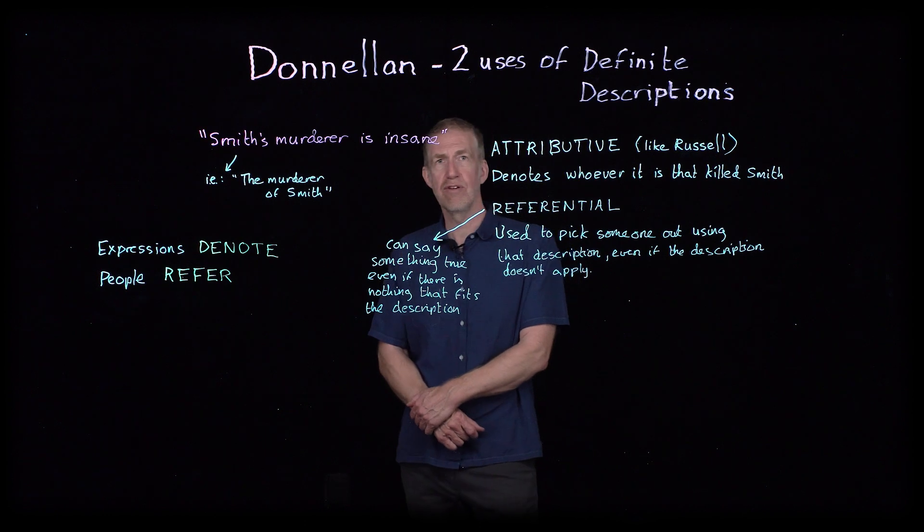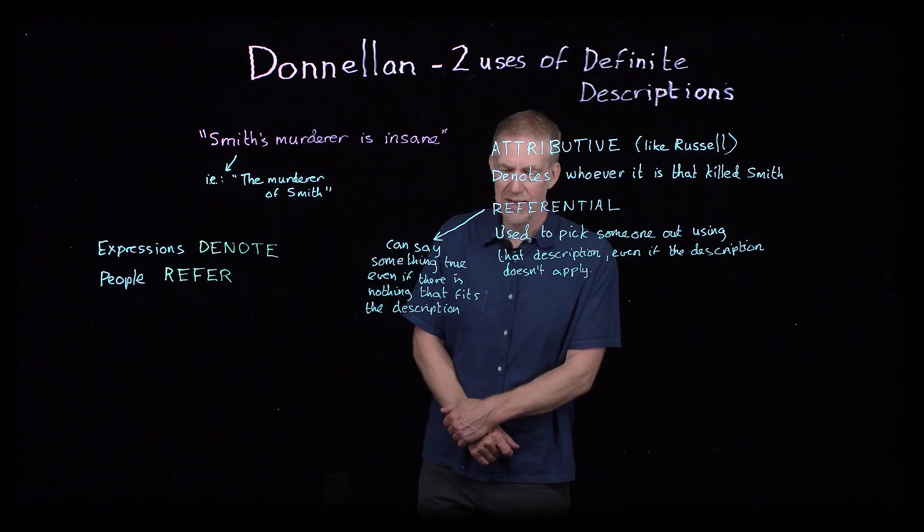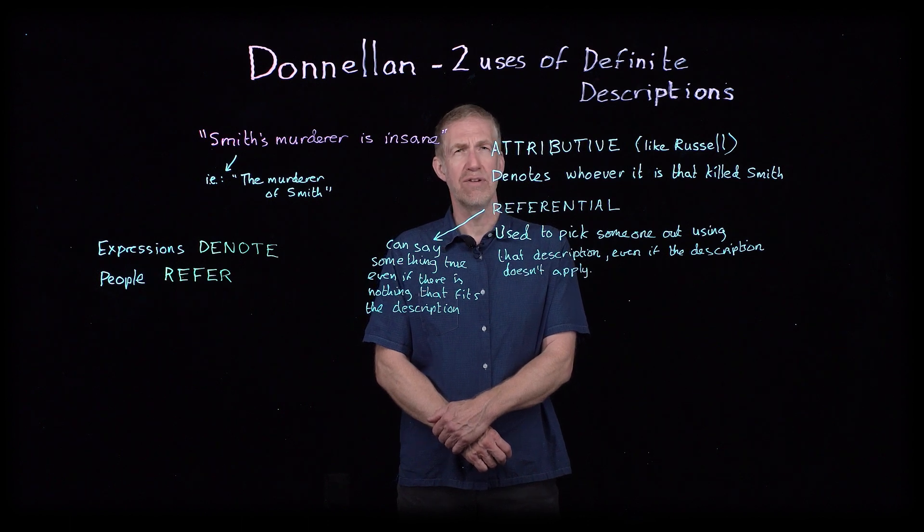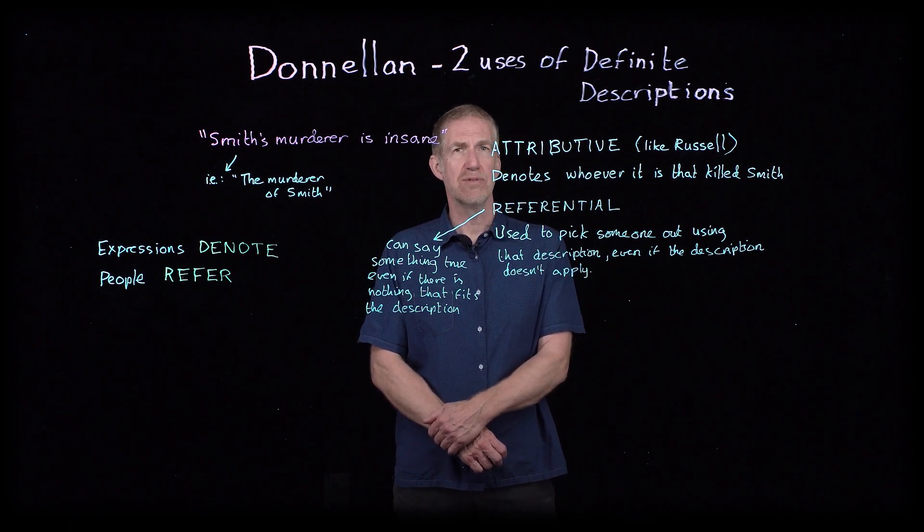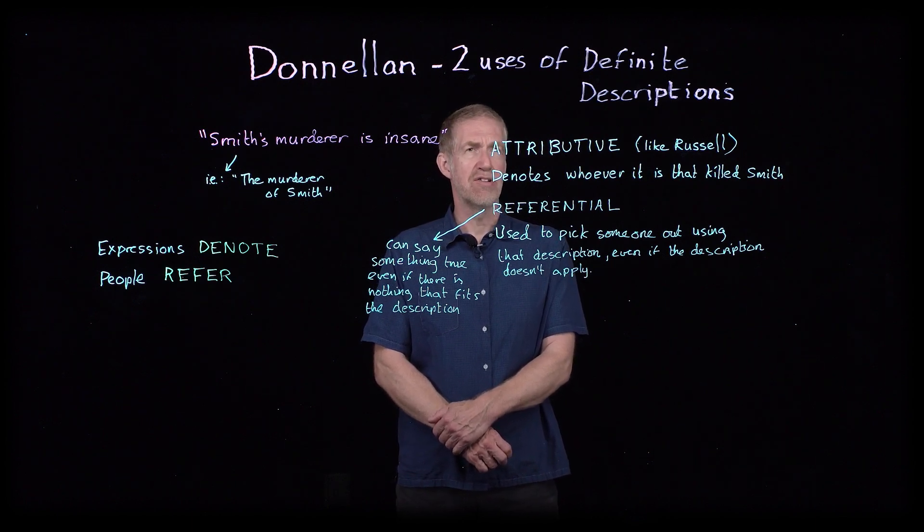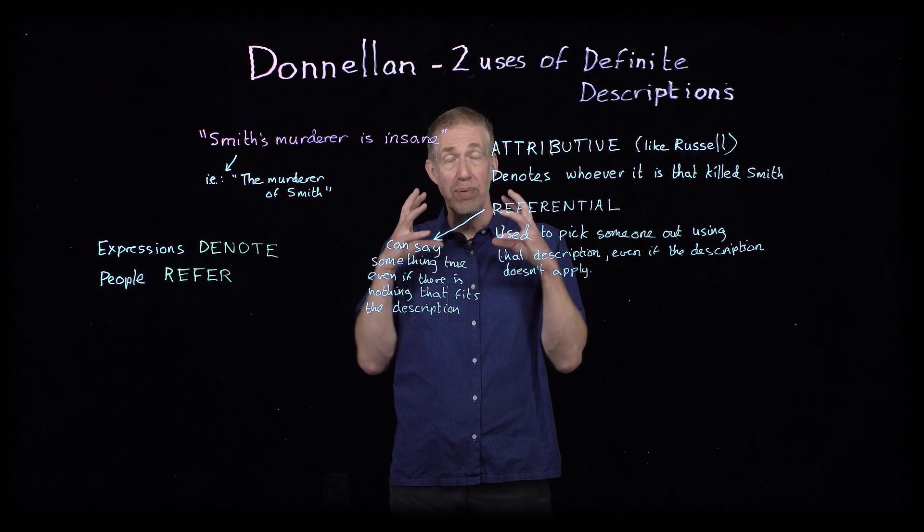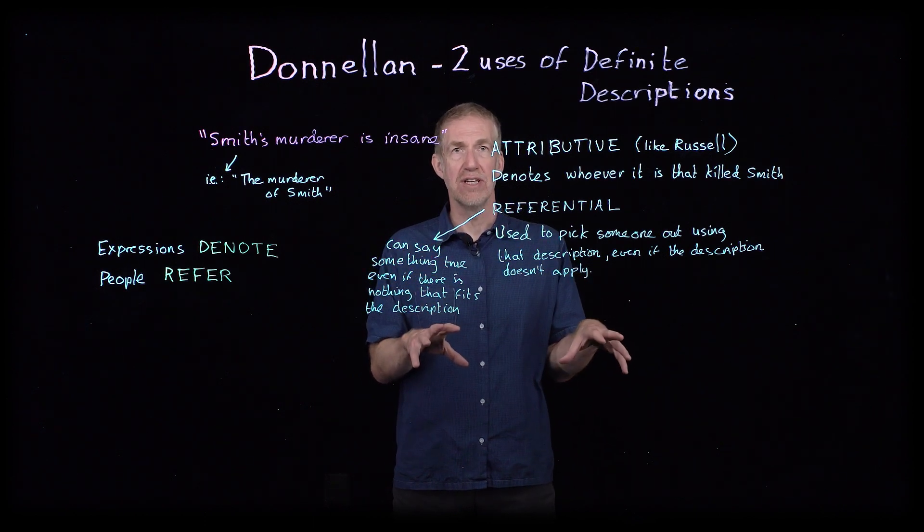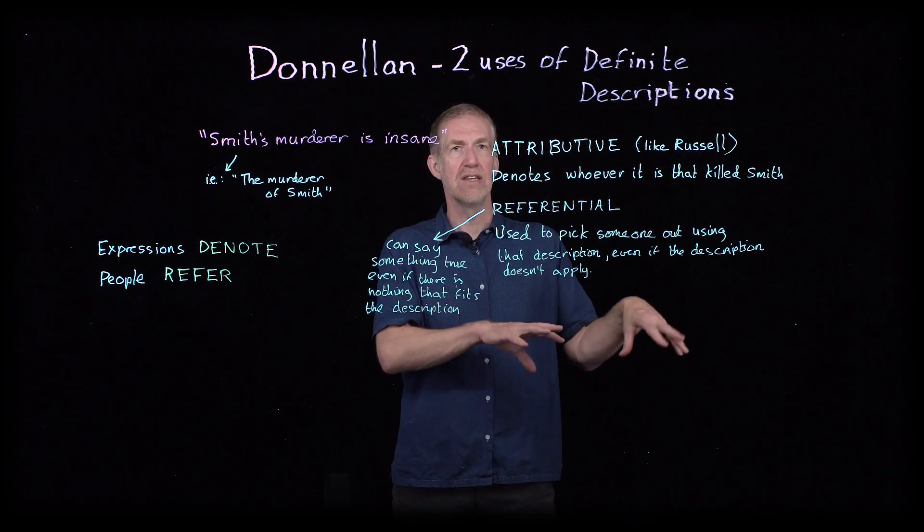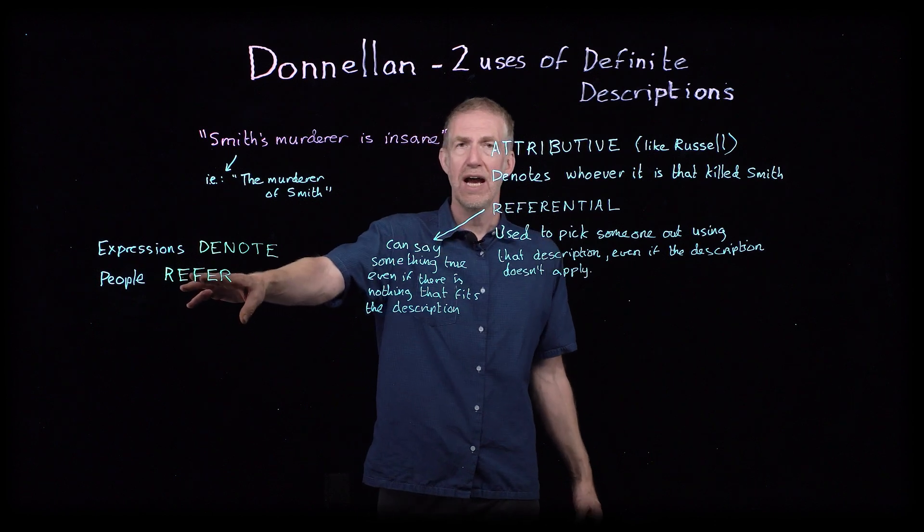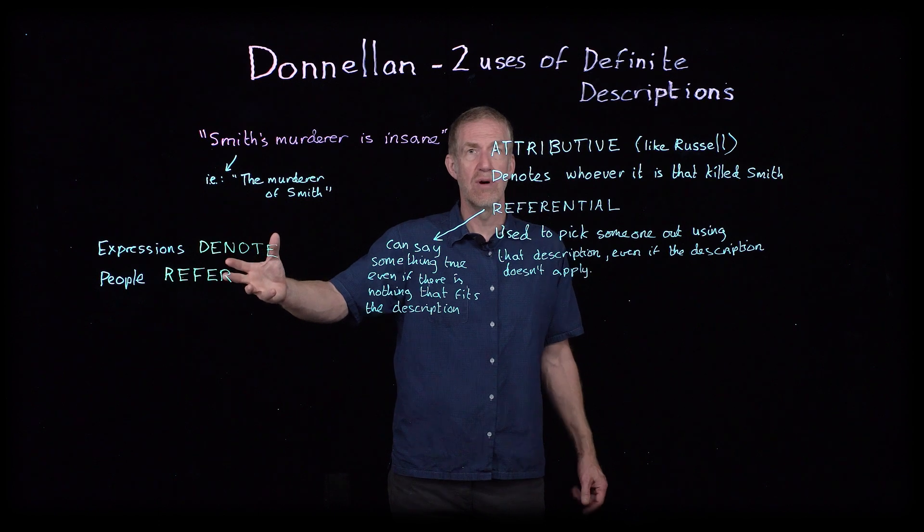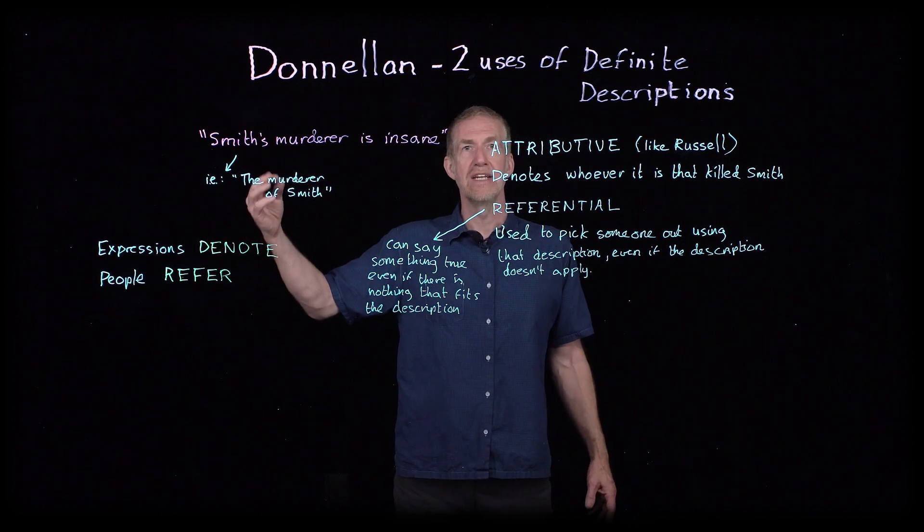Strawson, who is part of this school at mid-century in Oxford where it was under the influence of Wittgenstein, focusing much more on the users of language than language itself, and focusing on how it is that people can pick things out in the world. Now, using language to do so, but it's the people doing the picking out. And when that happens, that's called referring. So people can refer to things in the world. Language can denote things in the world.